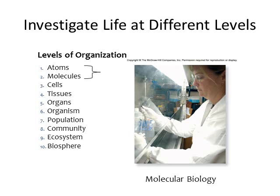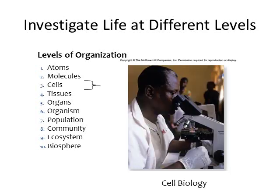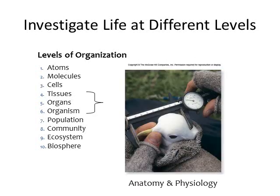Different types of biologists look at these different levels. At the smallest level — atoms and molecules — you have molecular biology, which is more chemistry but as it relates to living things. Moving up, cell biology looks at how cells grow, divide, and develop. Above that, anatomy and physiology looks at different tissues, bones, and muscles, how they create organs and organ systems, and how those systems all work together in one organism.